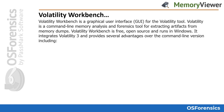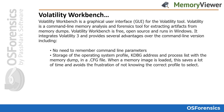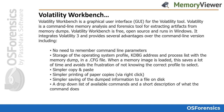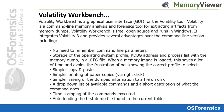Volatility Workbench integrates with Volatility 3 and provides several advantages over the command-line version, including no need to remember command-line parameters, storage of the operating system profile, the KDBG address, and process list with the memory dump in a config file. When a memory image is loaded, this saves a lot of time. It also simplifies copying and pasting returned data, printing paper copies through right-click options, saving dumped information to a file on disk, and provides a drop-down list of available commands with short descriptions, time-stamping of executed commands, and auto-loading the first dump file found in the current folder.